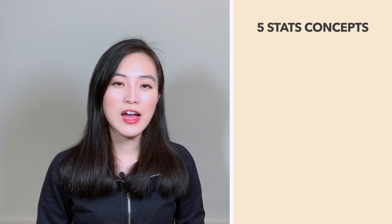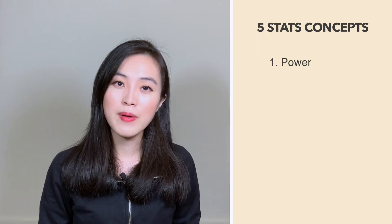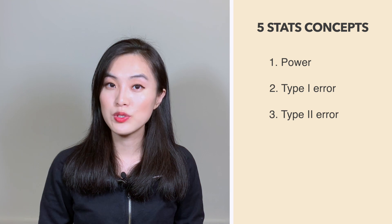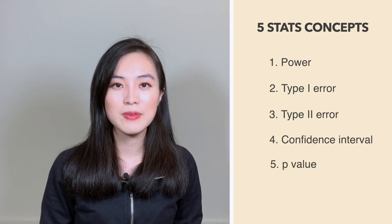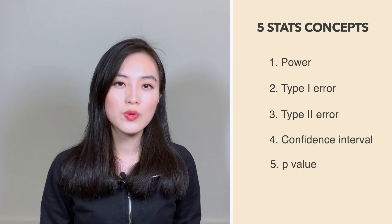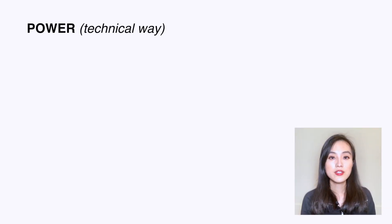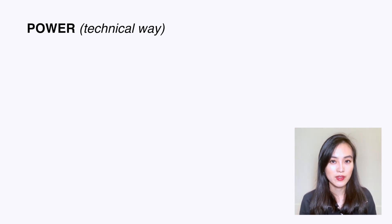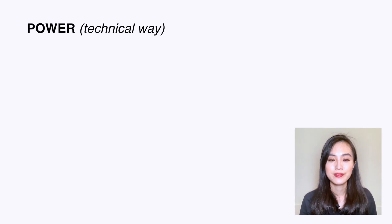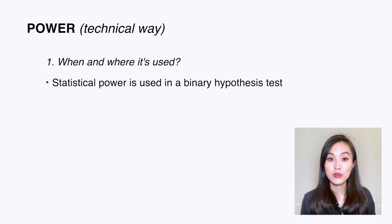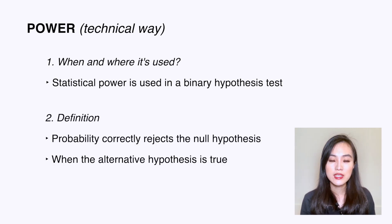Now that you've learned the theory, let's put it into practice. For the rest of the video I will go through five statistical concepts — power, type 1 error, type 2 error, confidence interval, and p-value — to show you how to explain them to both technical and non-technical audiences. The first concept is power. Let's explain it to a technical person.